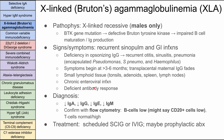Next is X-linked agammaglobulinemia, also called Bruton's agammaglobulinemia. It's X-linked so you'll see it in males. There's a BTK gene that has mutated — a defective Bruton tyrosine kinase leads to impaired B cell maturation and immunoglobulin production. Signs and symptoms include recurrent sinopulmonary and GI infections. There's a deficiency in opsonizing IgG, so they'll have recurrent otitis, sinusitis, and pneumonia. The encapsulated bugs you might see include strep pneumo, Haemophilus influenzae, and Pseudomonas. Symptoms usually begin around three to six months when maternal transplacental IgG has faded.